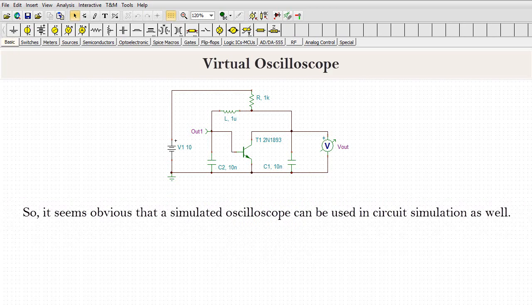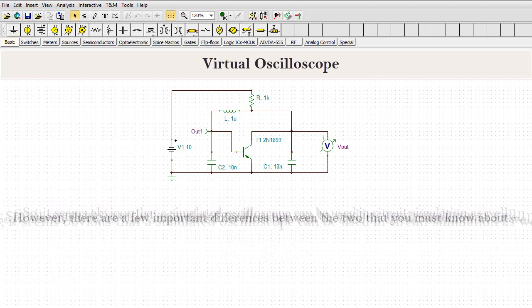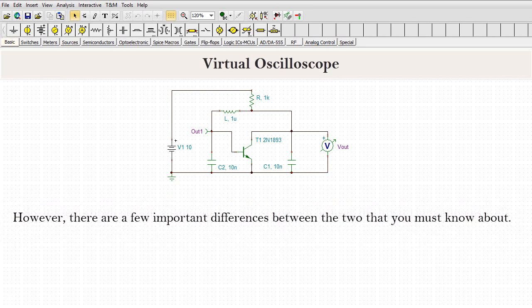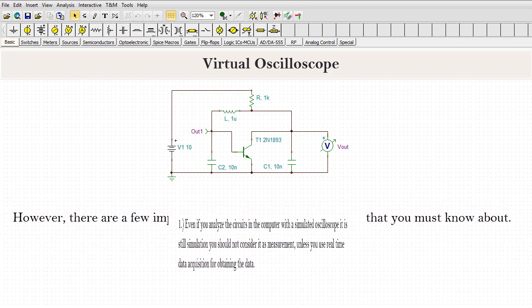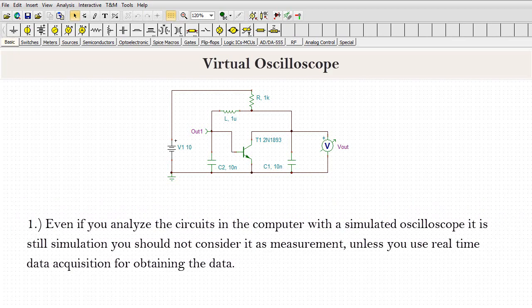So it seems obvious that a simulated oscilloscope can be used in circuit simulation as well. However, there are a few important differences between the two that you must know about. Even if you analyze the circuits in a computer with a simulated oscilloscope, it is still simulation. You should not consider it as measurement unless you use real-time data acquisition for obtaining the data.